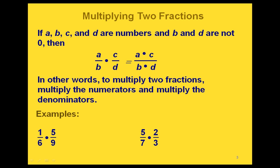When we multiply two fractions, all we have to do is multiply the numerators together and multiply the denominators together. If we have a over b times c over d, then we multiply a times c and multiply b times d. So we make this one big fraction — put our two numerators on the top and multiply, and put our two denominators on the bottom and multiply those two together.